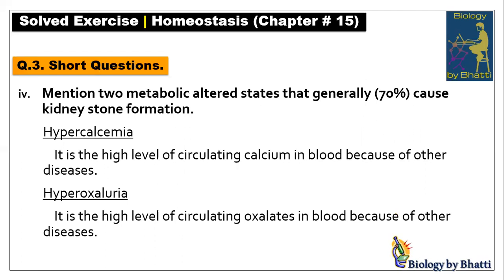Short question number four: mention two metabolic altered states that generally cause 70% of kidney stone formation. 70% of kidney stones are calcium oxalate type. There are two conditions: hypercalcemia — irregularly elevated levels of calcium in blood — and hyperoxaluria — abnormal increase of oxalate in blood. Sources of oxalate include tomato peel and spinach. When calcium and oxalate are both at high levels in the blood, they combine to form calcium oxalate stones, accounting for 70% of all kidney stones.